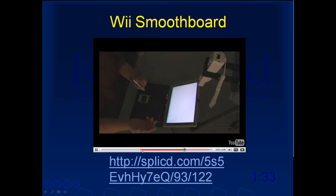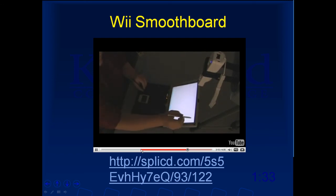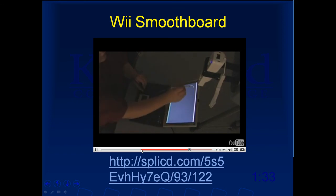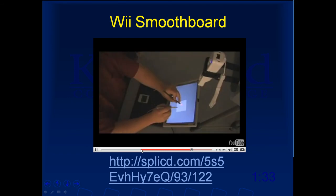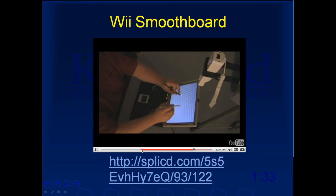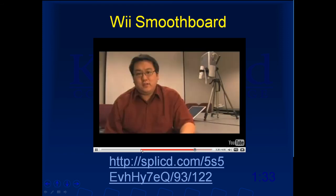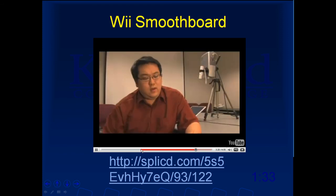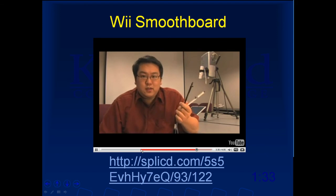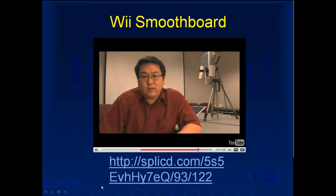If you don't happen to have a projector, you can still use the same technique with a liquid crystal display. You simply mount the Wiimote, point it at the display, and do the four-point touch calibration. Now you can essentially turn any liquid crystal display into a multi-touch tablet surface. With the Nintendo Wiimote and some infrared LED light pens, you can create your own really low-cost multi-touch interactive whiteboard system or a multi-touch tablet PC.